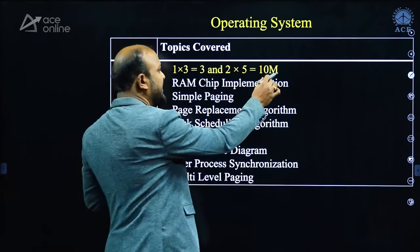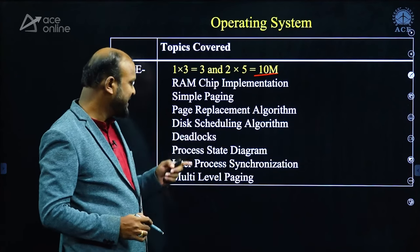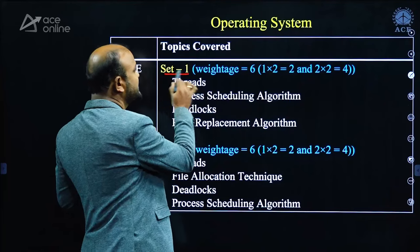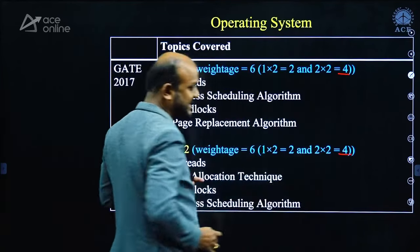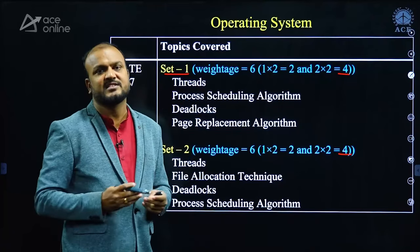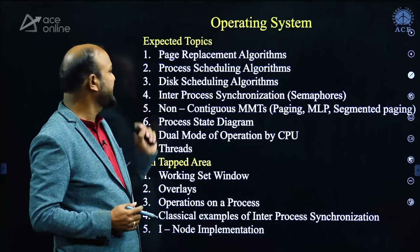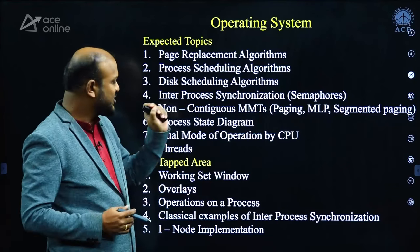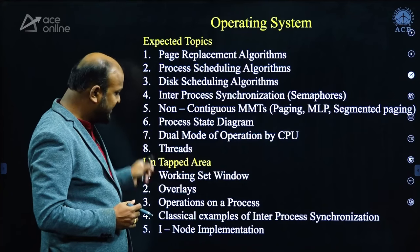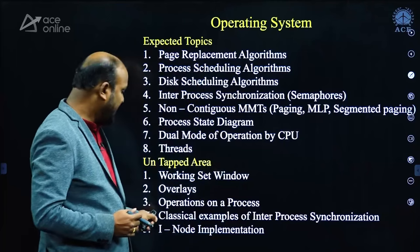For Operating Systems, in 2009, 10 marks were given from topics including RAM chip implementation, simple paging techniques, page replacement algorithms, disk scheduling algorithms, deadlocks, process state diagrams, inter-process synchronization, and multi-level paging. In 2017, only 4 marks were given in each set — comparatively less weightage. Expected topics are page replacement algorithms, process scheduling algorithms, disk scheduling algorithms, inter-process synchronization, non-contiguous memory management, process state diagrams, dual mode of CPU operations, and threads. Untapped areas include working set windows, overlays, operations on a process, classical examples of inter-process synchronization, and inode implementation.